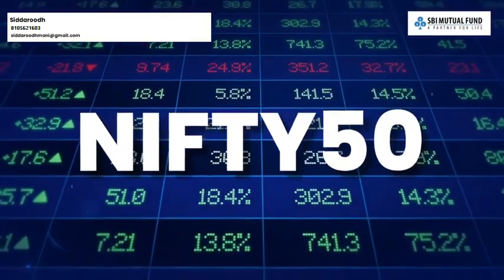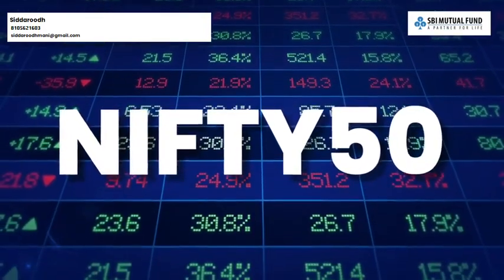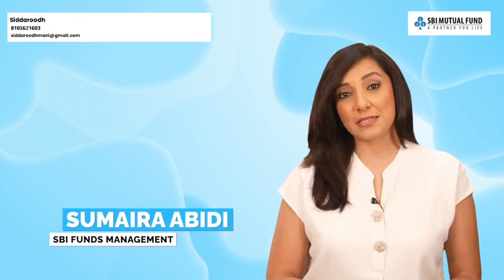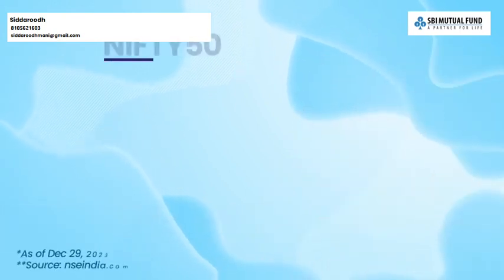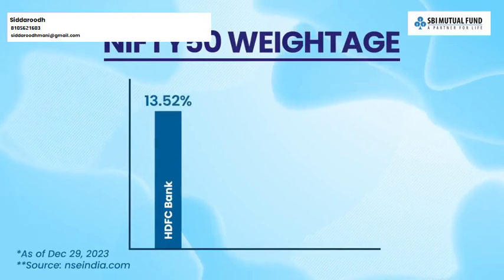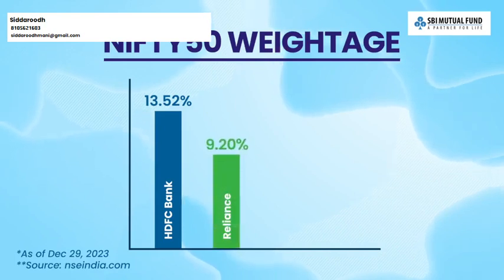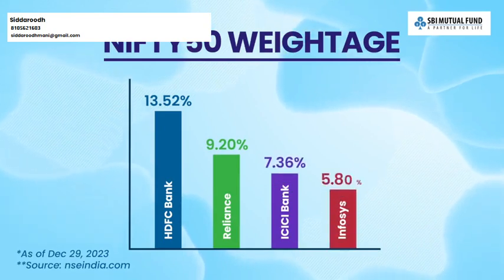Nifty 50 is India's benchmark stock market index made up of 50 of India's largest listed companies. These 50 companies are present in the Nifty in varying proportions. For example, the largest stock as of now is HDFC Bank, which has a weightage of over 13%. Next in line is Reliance Industries with a weightage of over 9%, ICICI Bank at over 7%, Infosys at a shade under 6%, and so on.